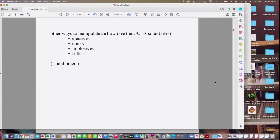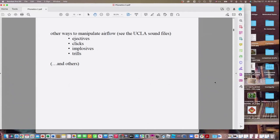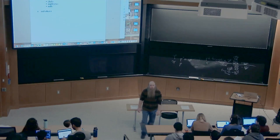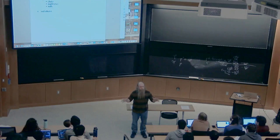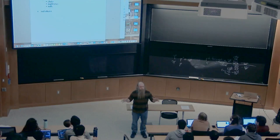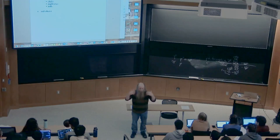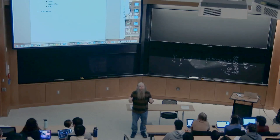To make an ejective T: hold your breath and try to make an audible T sound, then release into a vowel — 'at-ah, at-ah'. You can also do this with a bilabial ejective stop — 'up-ah, up-ah' — or a velar ejective stop — 'ak-ah, ak-ah'. The class attempts the sounds.